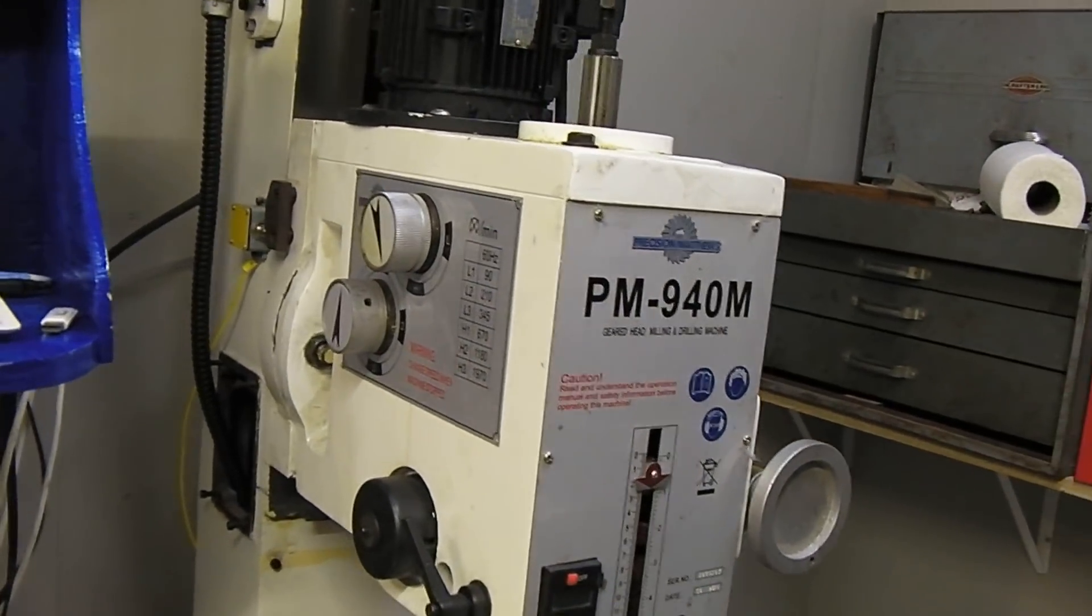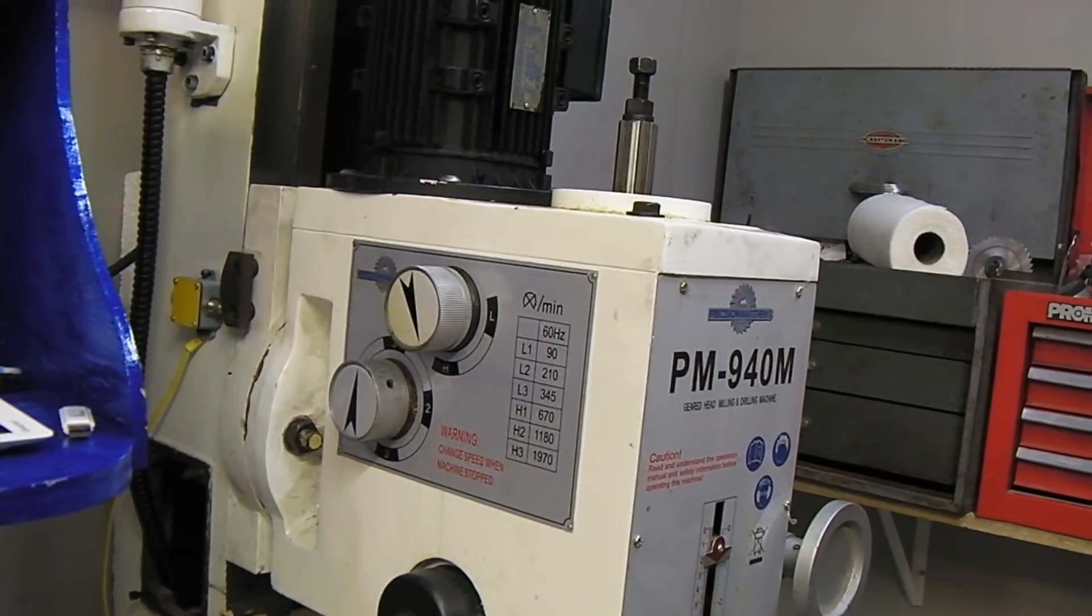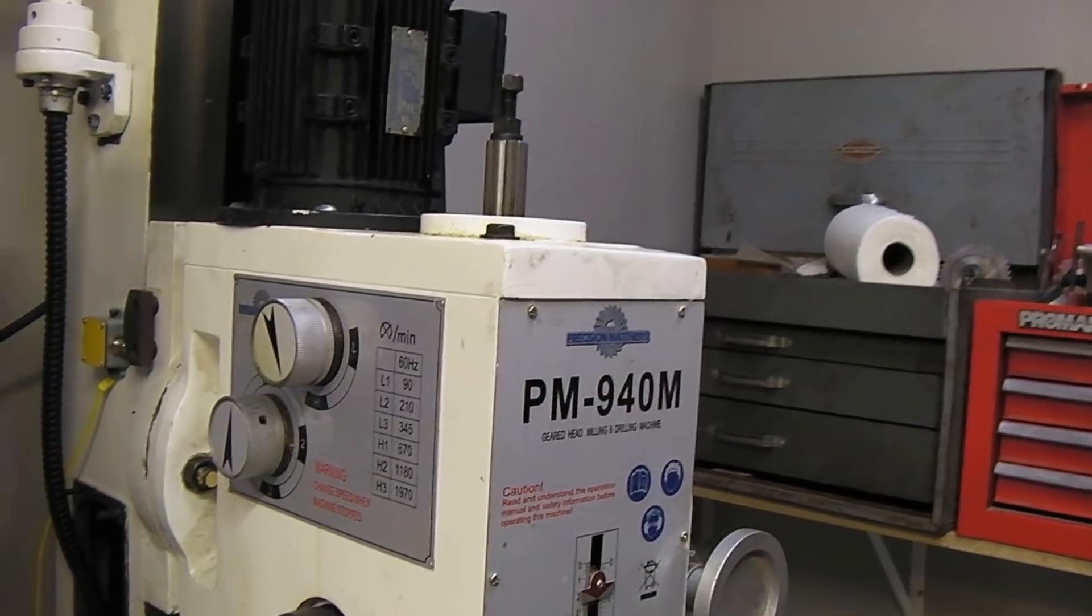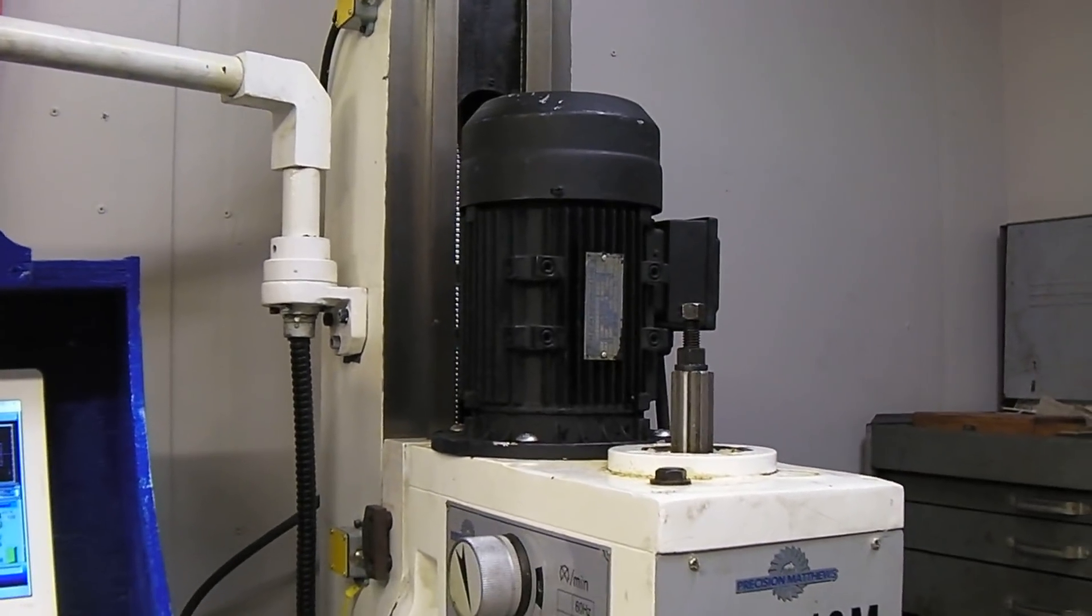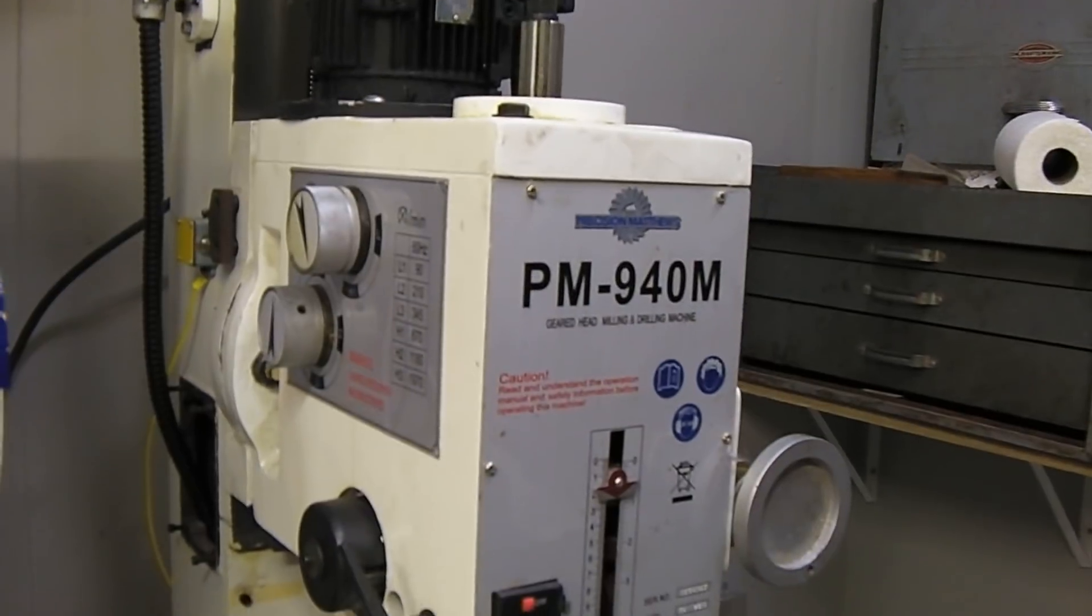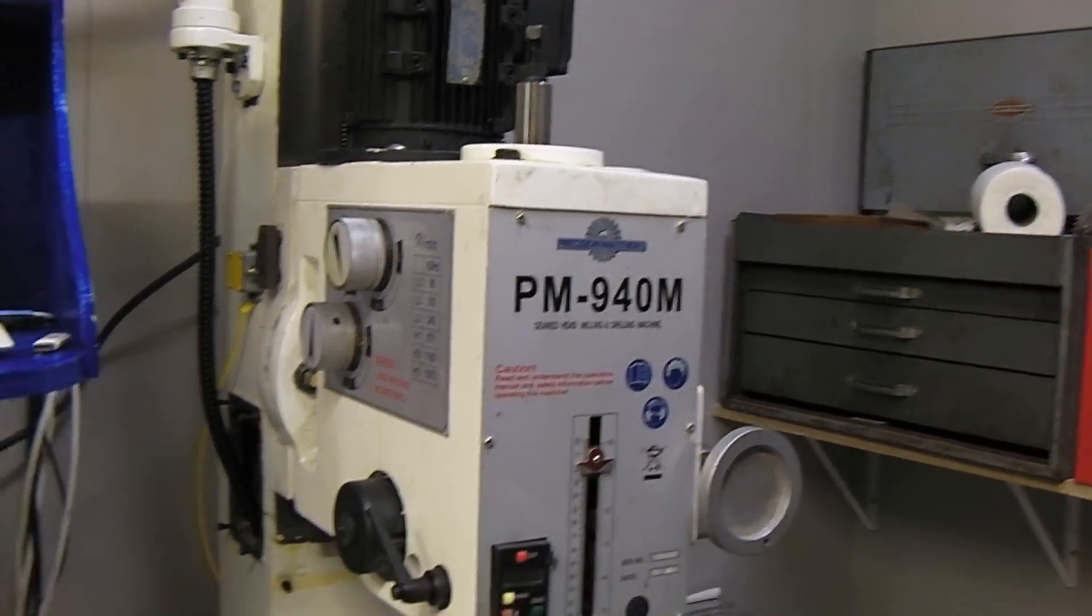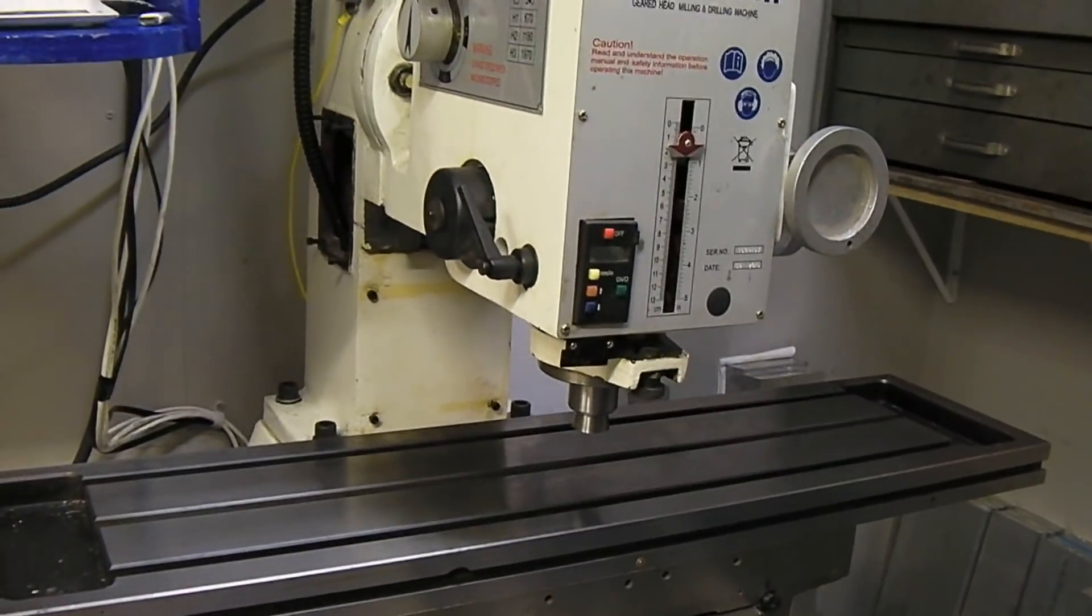You know, the gearbox on this is much quieter than any of the other RF45s that I've run. I'm actually almost tempted to leave this thing and put a 3600 RPM motor on it, and not worry about putting the belt drive on it. I mean, it's almost that good. I'm actually really quite surprised with that, but we'll machine with it for a while, and we'll see what we're doing.